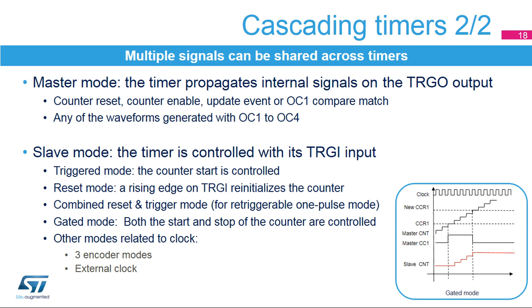Alternatively, the TRGO output can also transmit one of four waveforms generated, including PWM signals, to the other timing modules. In slave mode, the timer operating mode is controlled by the TRGI input. In triggered mode, the counter-start is externally controlled, used for simultaneously starting multiple timers. In reset mode, the counter is reset by a rising edge on the TRGI input, typically for variable frequency PWM operation.